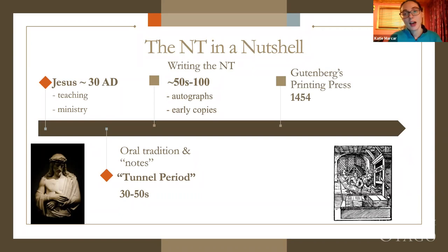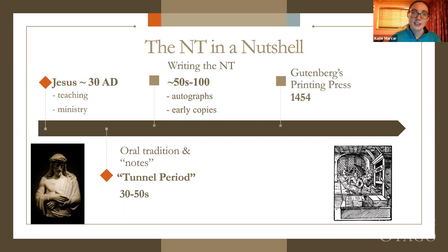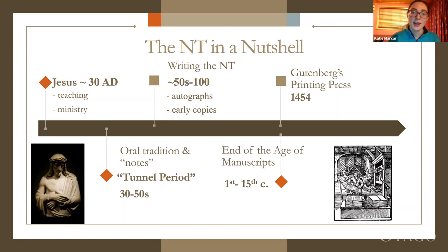Things had to be written by hand, and that's true for the next nearly 1,400 years until Gutenberg's printing press. If things are being written by hand, it's a very laborious process, and there are always going to be very small, minute changes that happen during that process. We tend to think of the end of the age of manuscripts as running from the first century to the 15th century. From Gutenberg's printing press onward, you have a way of standardizing a written text.